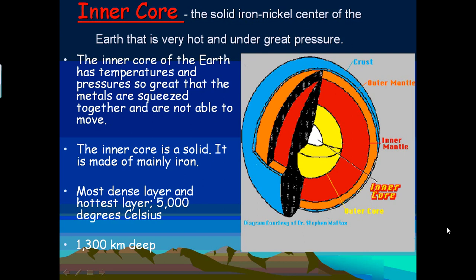The inner core is the center of Earth. It is solid iron and nickel that is very hot and under great pressure. The inner core has temperatures and pressures so extreme that the metals are squeezed together and cannot move.